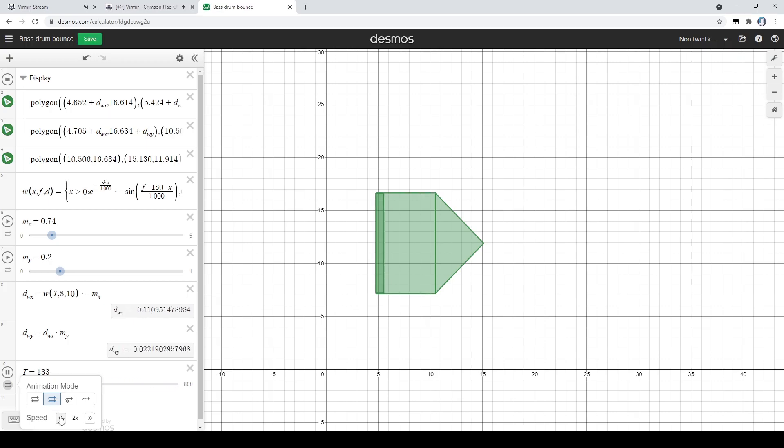Here's the Desmos graph for the drum bounce. As you can tell, it's pretty simple. The head just gets moved backwards, and the body gets squished and scaled.